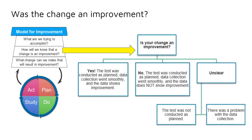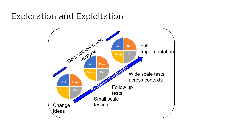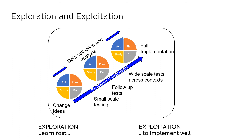During cycles of inquiry, members continually refer to the three overarching questions from our model for improvement as they make decisions about whether to adapt, adopt, or abandon specific change ideas. This graphic depicts how we use small-scale tests of change first — with rapid PDSA cycles — to explore the efficacy of a change idea in practice before fully exploiting it, or spreading and scaling it across contexts.